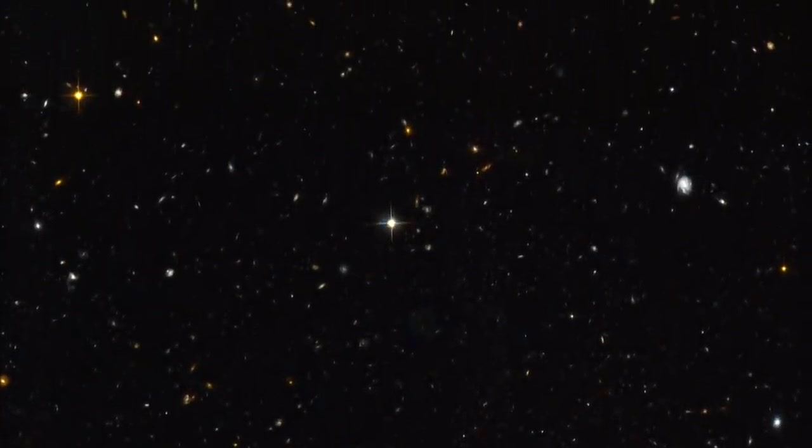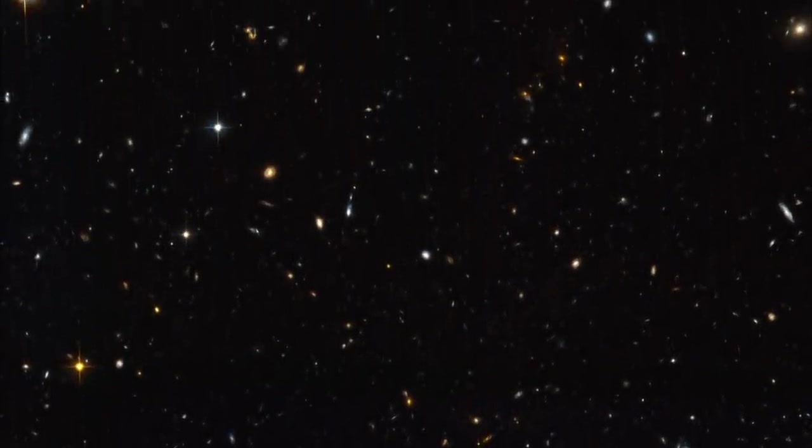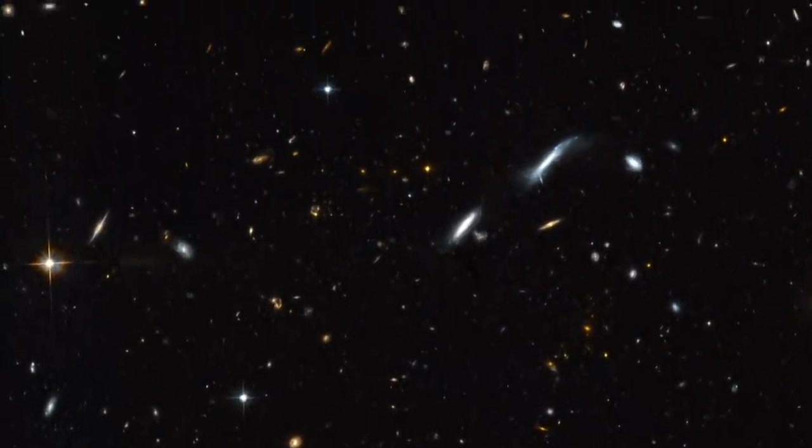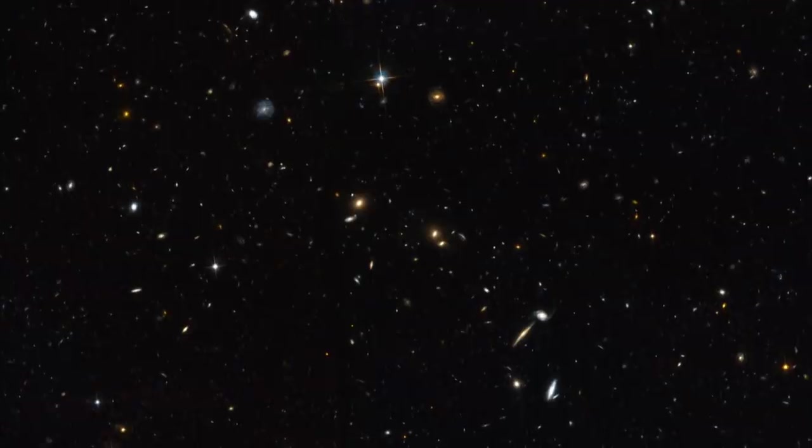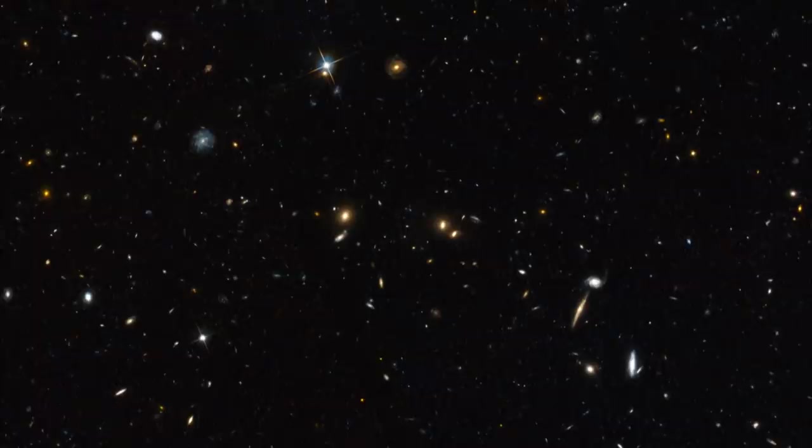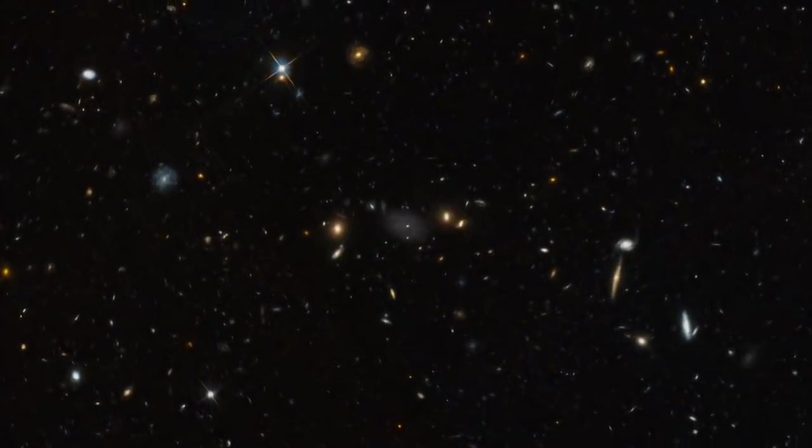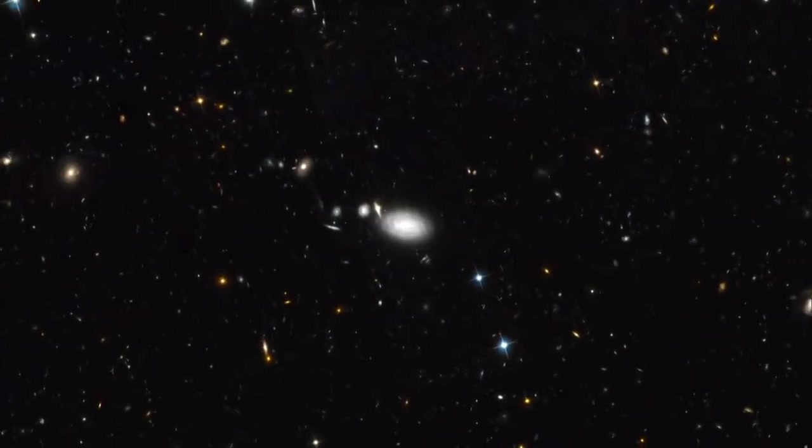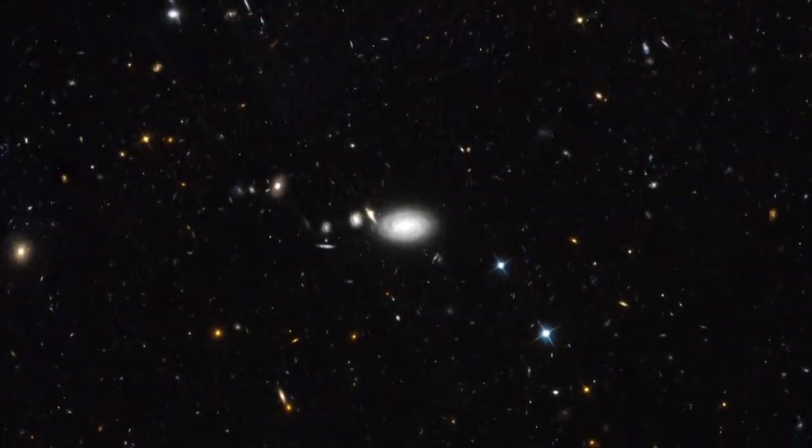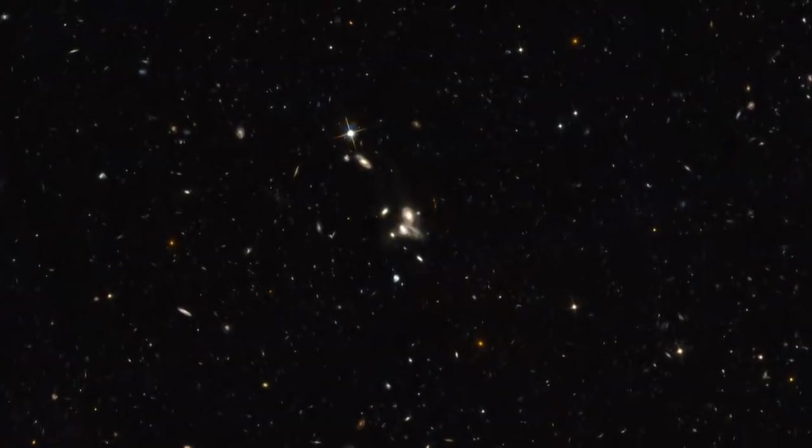Only Hubble could create a view like this one, a view that opens up more of deep space to the human eye than any other image in history. Looking more closely, Hubble has found that this random sampling of galaxies contains surprising diversity. Some of the galaxies are spiral shaped like our own home galaxy the Milky Way, yet others appear jumbled and distorted.